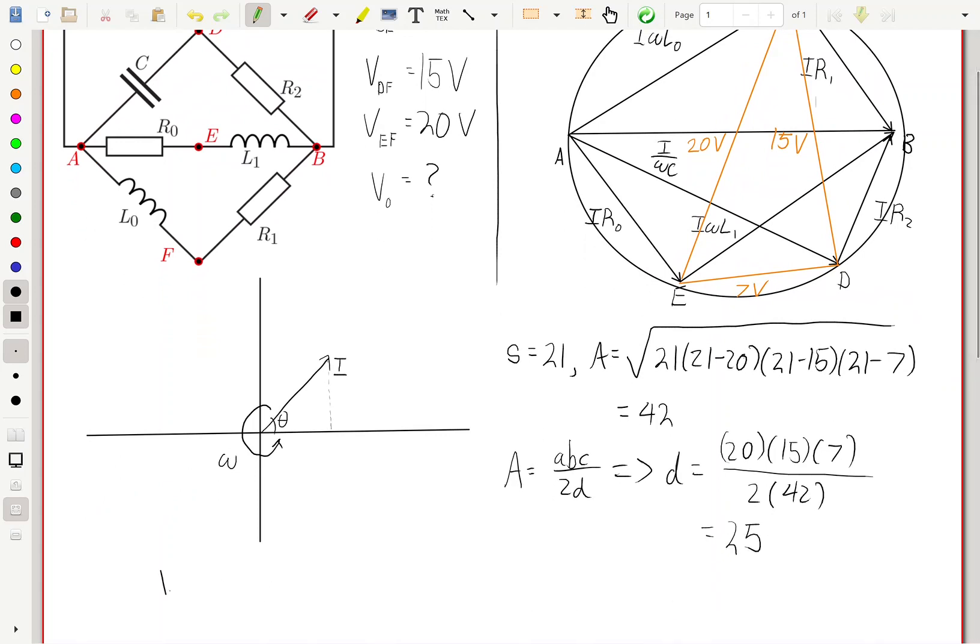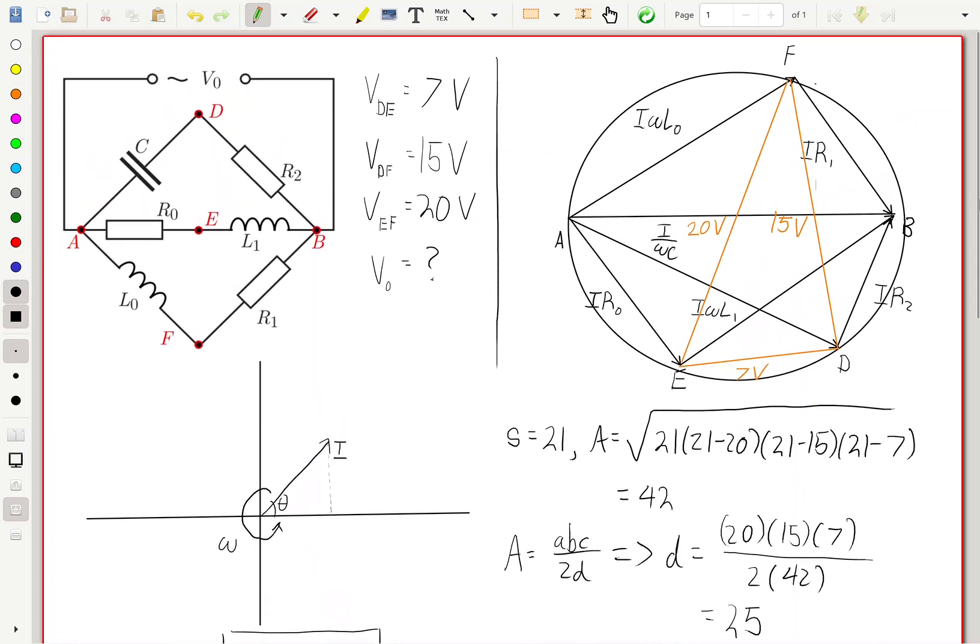So therefore, the voltage difference from A to B is going to be 25 volts. And that's also going to be V0. And there we have it. A geometry problem in disguise inside an AC circuit problem.